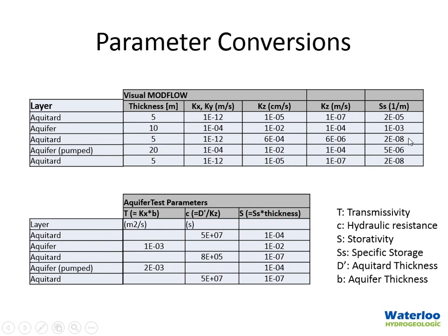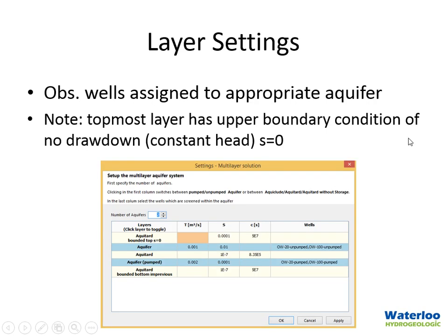There are some differences in how parameters are defined in Visual MODFLOW versus AquiferTest, so we made appropriate conversions: hydraulic conductivity values in Visual MODFLOW were converted to transmissivity in AquiferTest, specific storage values were converted to storativity based on layer thickness, and the hydraulic resistance C value for the aquitard was calculated using the vertical hydraulic conductivity from Visual MODFLOW and the aquitard thickness D'. We then created the new AquiferTest project, defined observation and pumping well locations with appropriate radial distances, loaded the time-drawdown data exported from Visual MODFLOW, defined the layer order, and mapped observation wells to the pumped and unpumped aquifers.